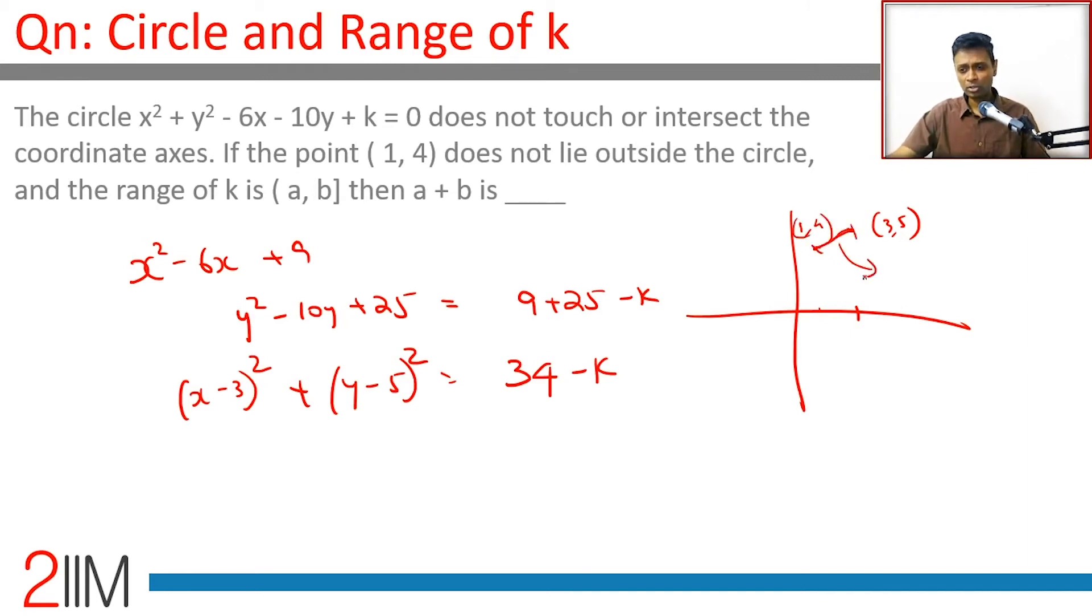Just plugging in the distance formula: √[(3 - 1)² + (5 - 4)²] = √(2² + 1²) = √5.